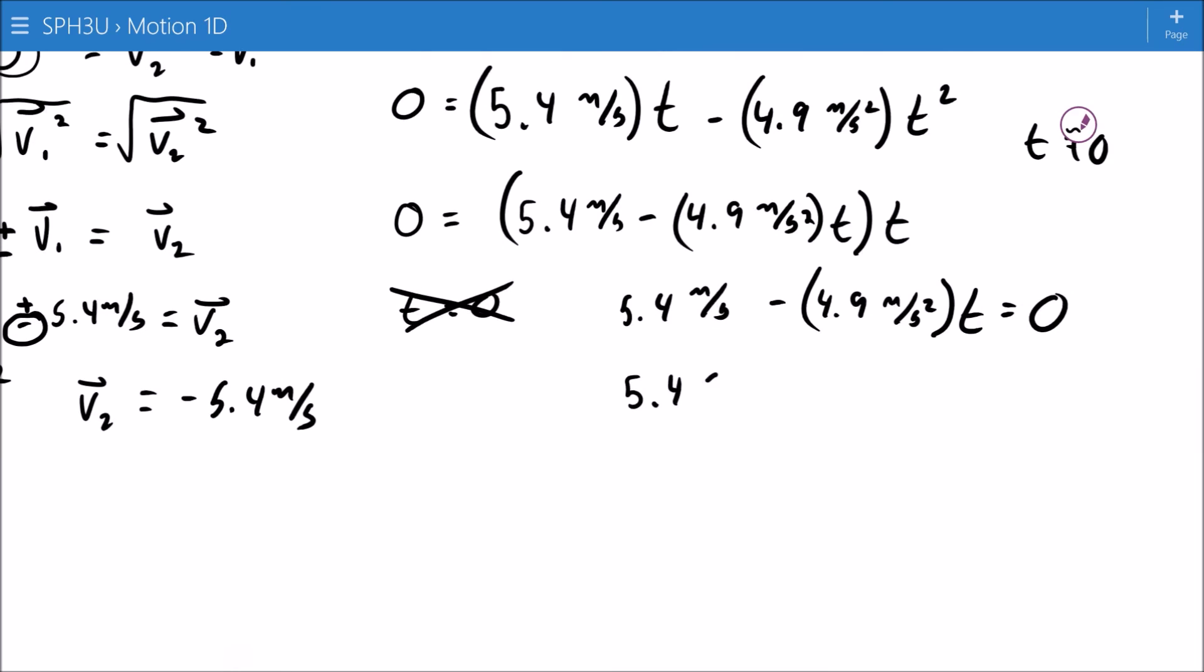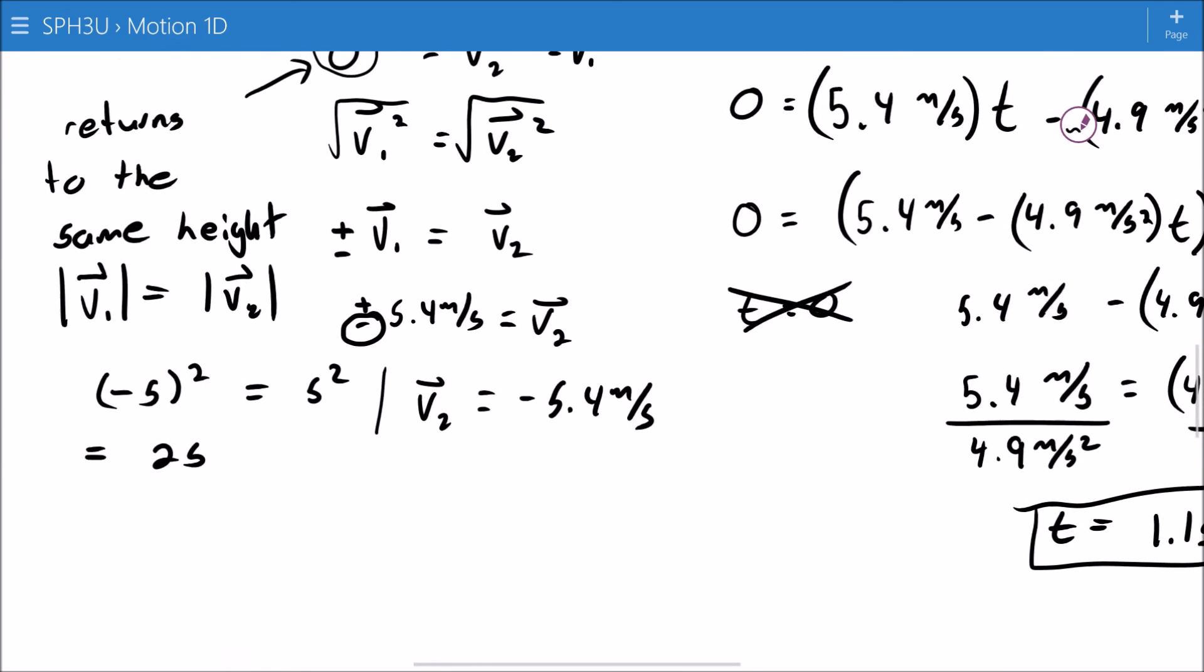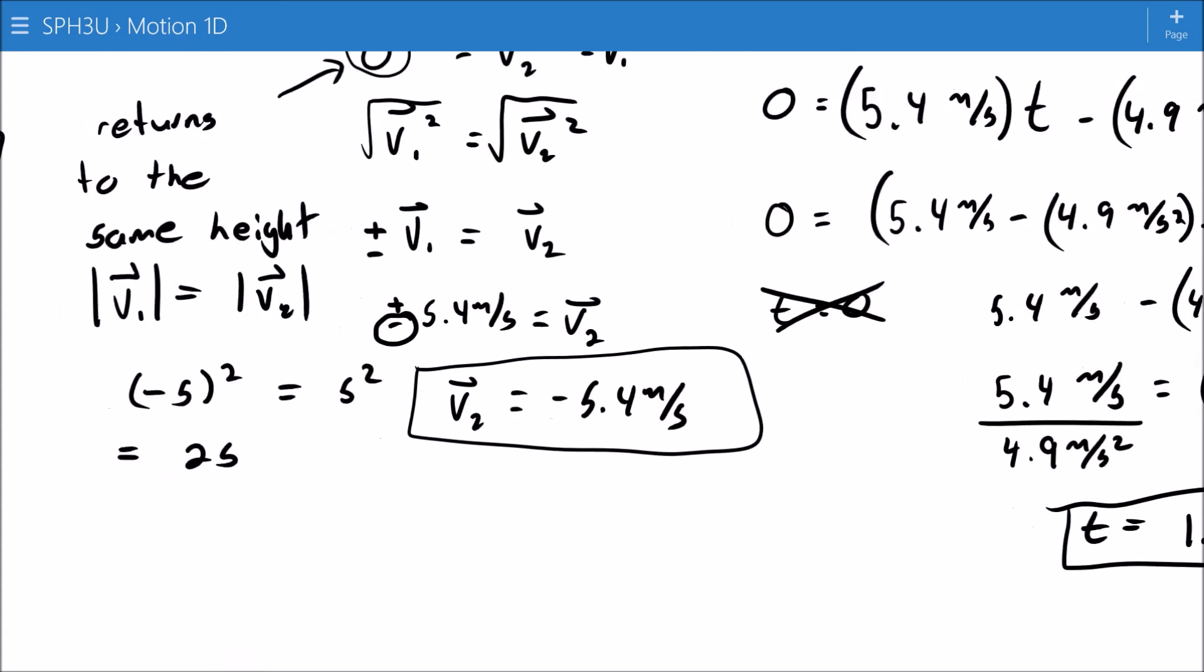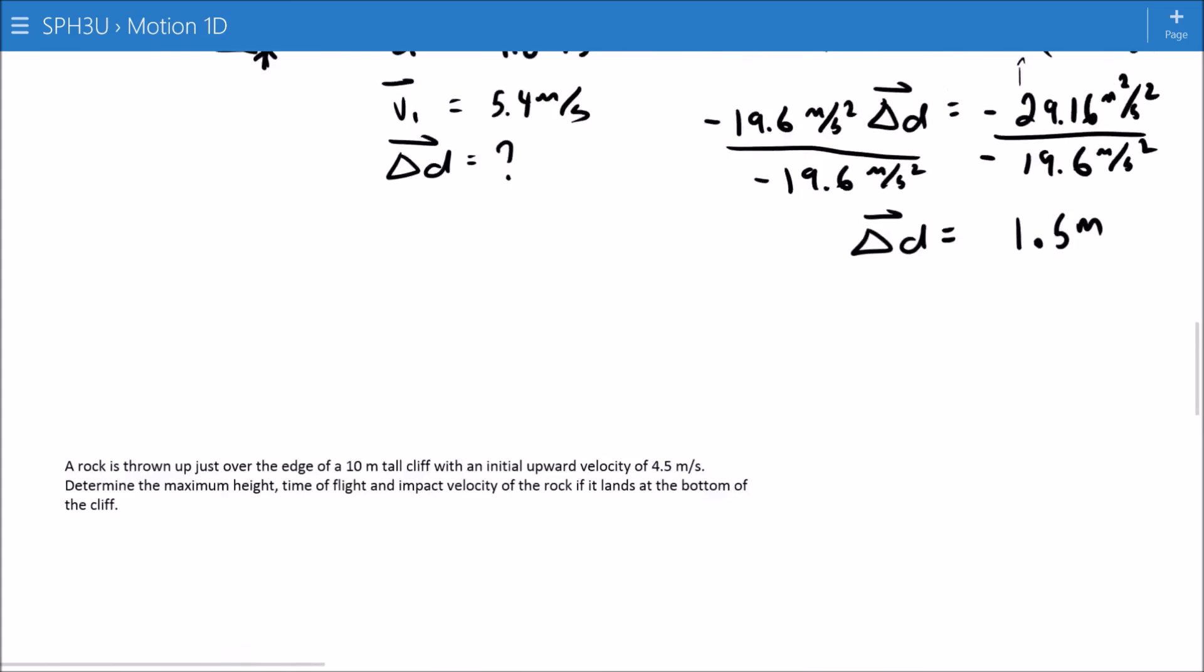But this is just a little more formally correct. Moving my T to the other side and dividing both sides by 4.9. And I'll get a T of 1.1 seconds. So there we are, there's your time of flight, there's your final velocity, and your maximum height.